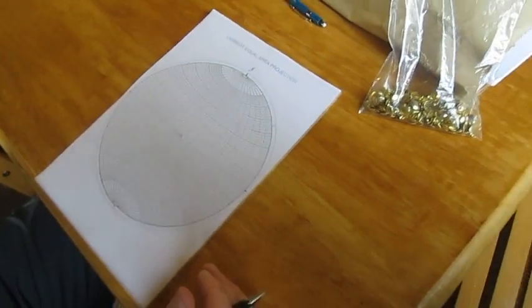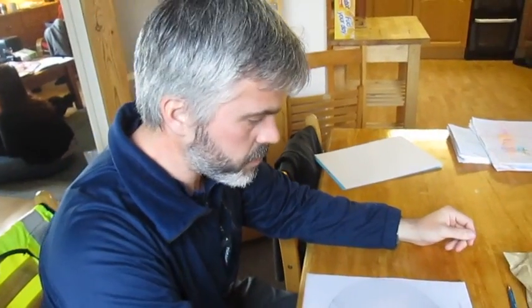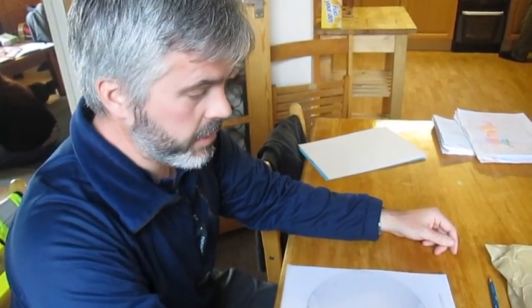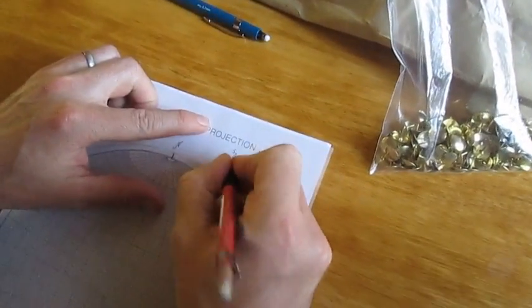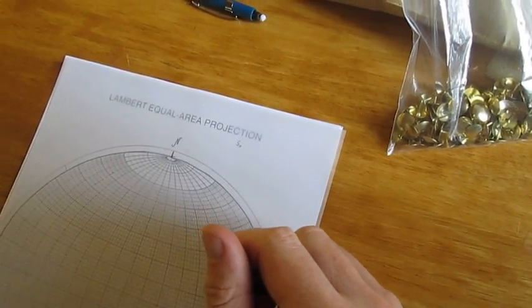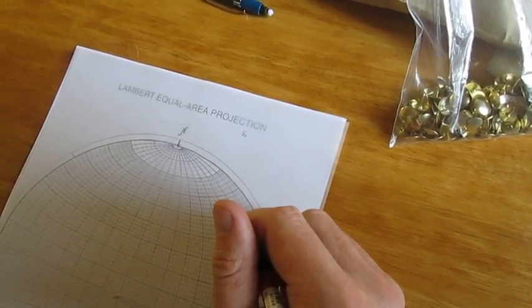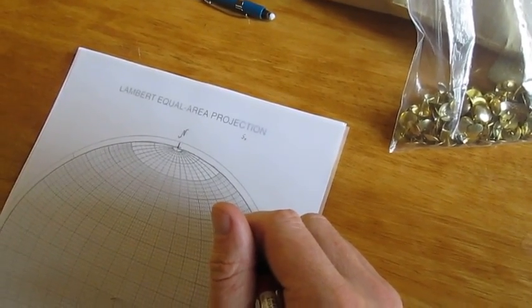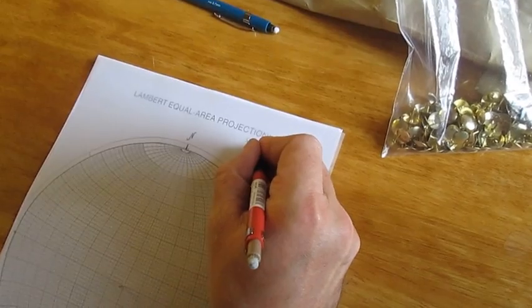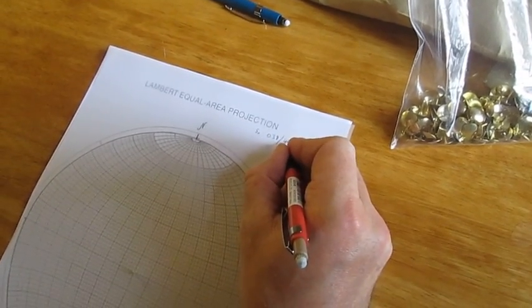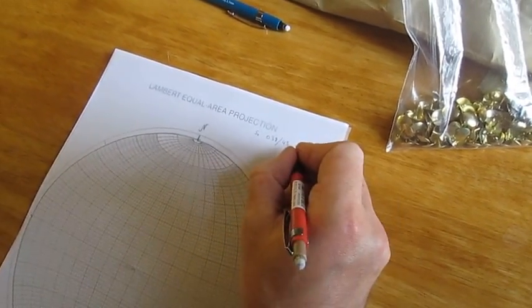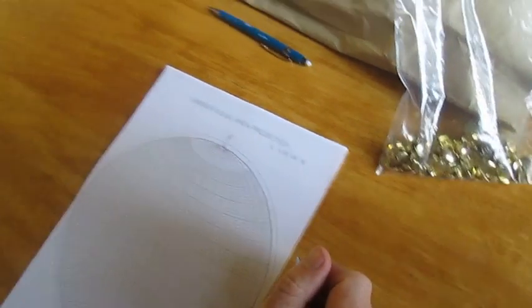So let's first of all practice drawing a great circle to represent a planar structure such as bedding or cleavage. Let's say for example we have a bedding plane, so our data will be coded as S0, and let's pick a random strike and dip. If you have a random strike, let's say the strike is 038.